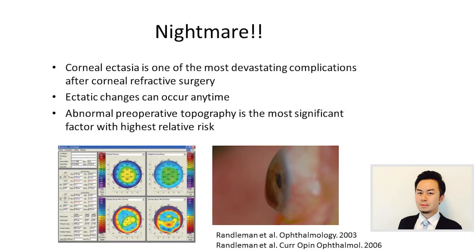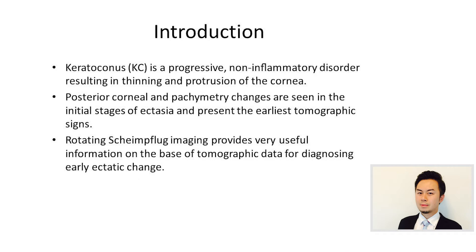We all don't want this to occur — this is corneal ectasia. It is one of the most devastating complications after corneal refractive surgery, and it can occur at any time. Studies have shown that abnormal preoperative topography is the most significant risk factor for developing corneal ectasia. Keratoconus is one example, and posterior corneal and pachymetric changes are present as the earliest topographical signs in keratoconus.